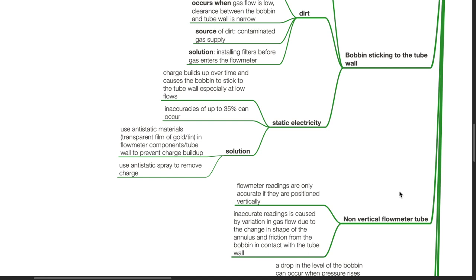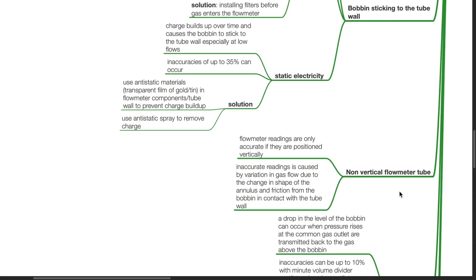Solution: Use anti-static materials such as transparent film of gold or tin in the flow meter components or tube wall to prevent charge build up and use anti-static spray to remove charge.